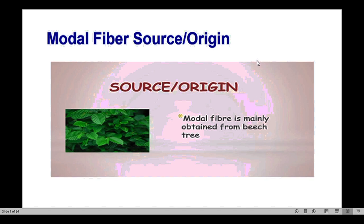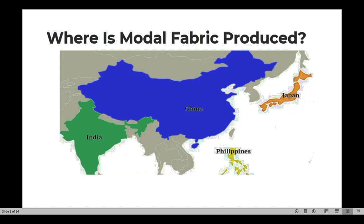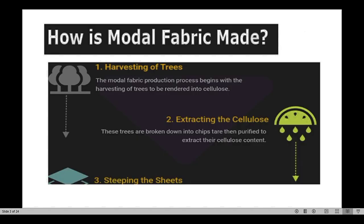Modal fiber's source or origin is mainly obtained from the beech tree. As already mentioned, it is a natural fiber. The major countries where Modal fiber production is done are China, India, the Philippines, and Japan. China has the largest share of production, followed by India.